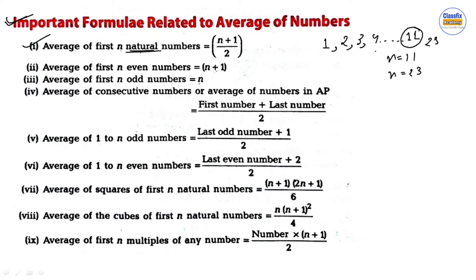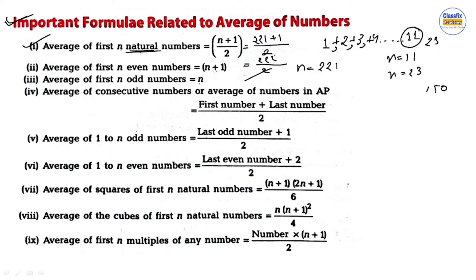Suppose we easily calculate using this simple formula. Suppose n is equal to 221. Then we apply: n plus 1 divided by 2. So 221 plus 1 divided by 2 equals 222 divided by 2, which equals 111.